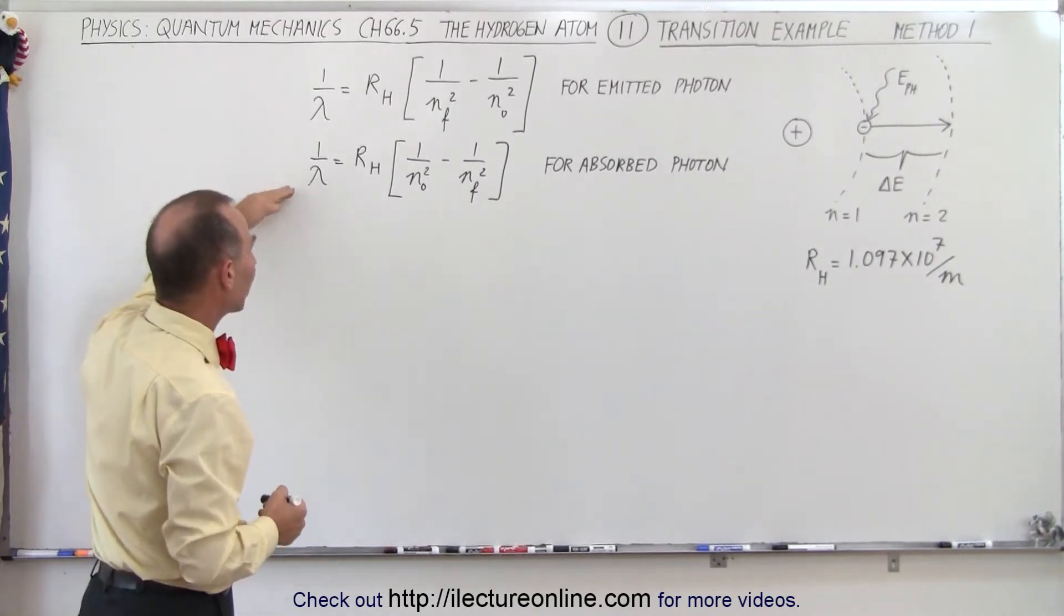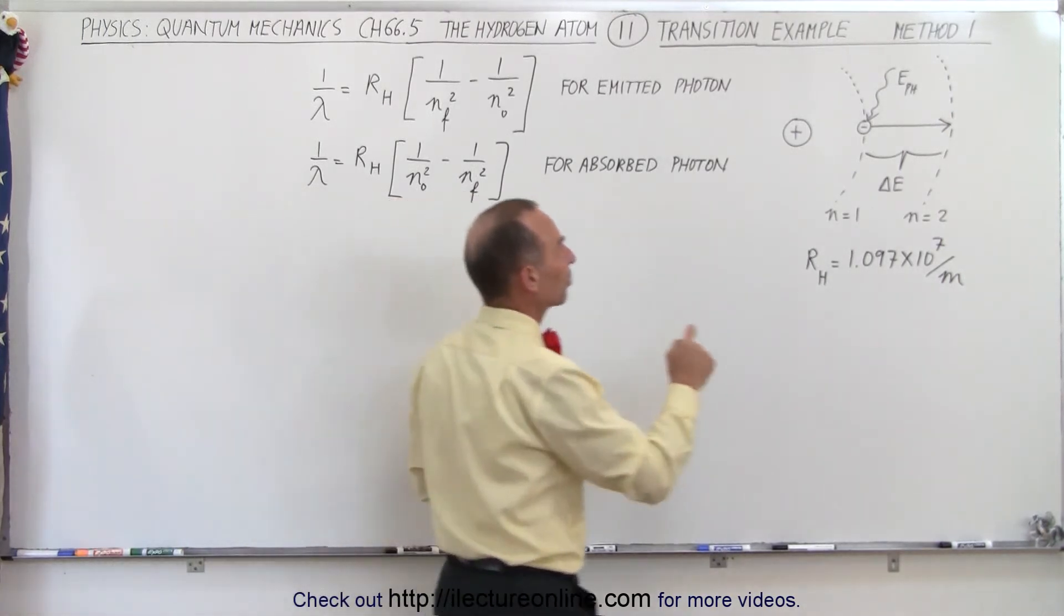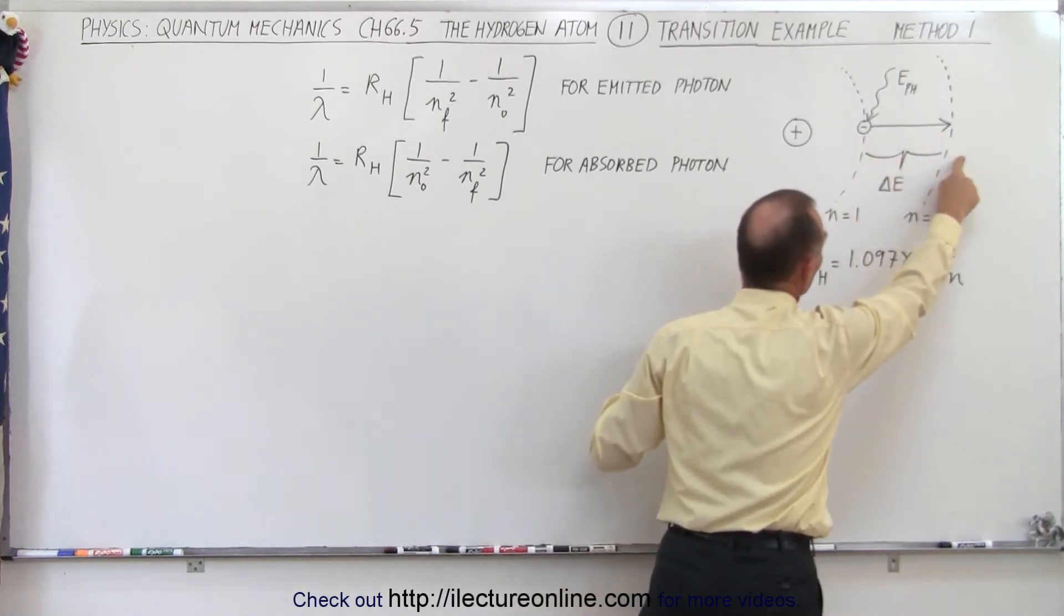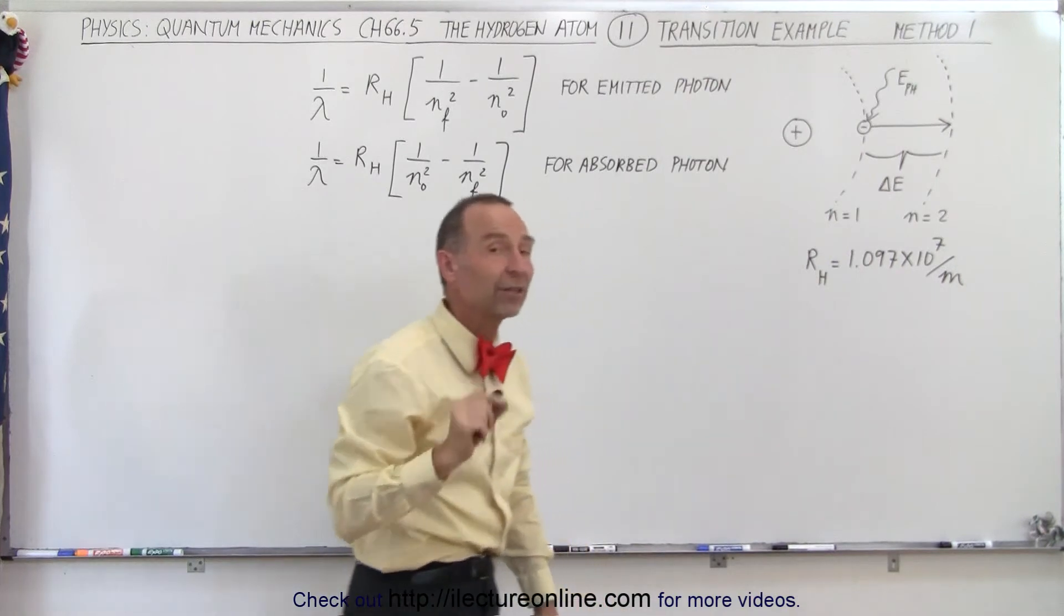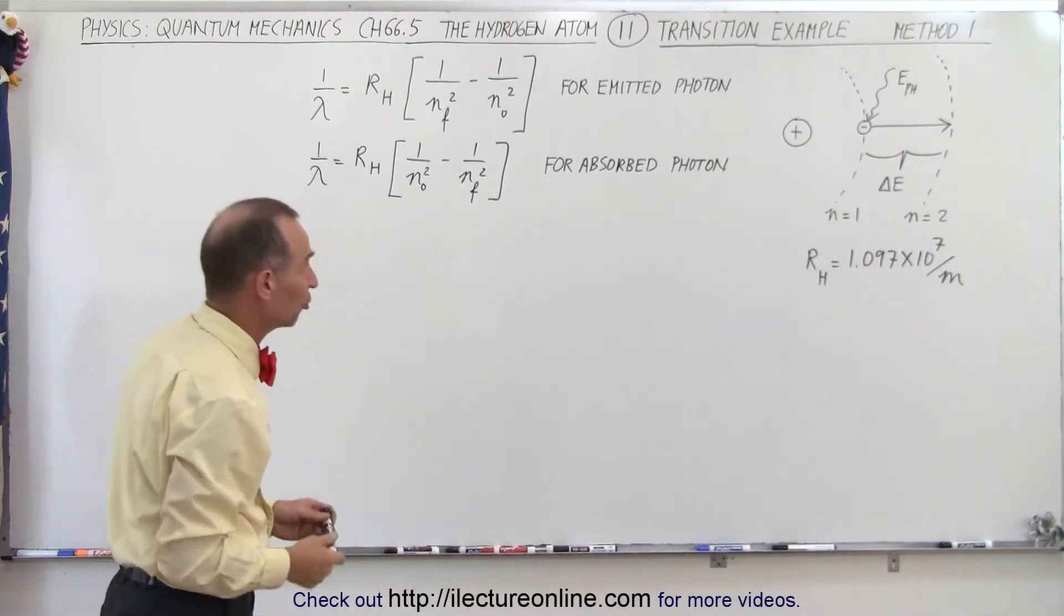So we're going to use the second equation in this case because the electron is going to jump from the first orbit to the second orbit, from n equals 1 to n equals 2, and we want to know the wavelength of the photon associated with such a jump.